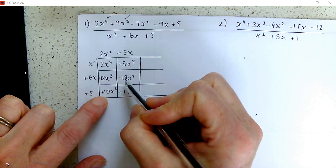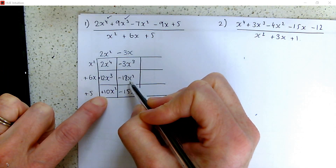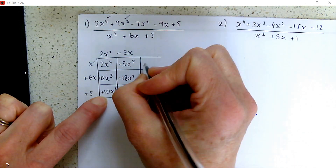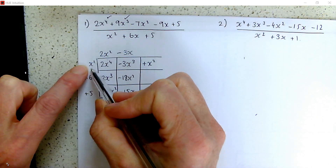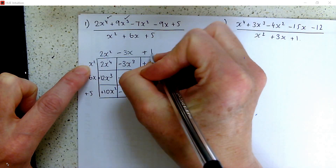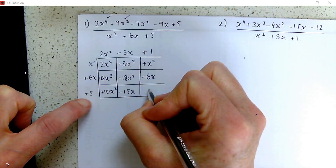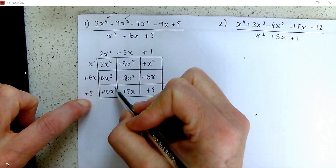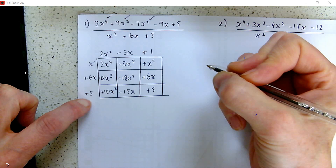We've got 10x squared minus 18x squared, which is minus 8x squared. But we want minus 7x squared, so we need to add x squared. We think: what do we multiply x squared by to make x squared? Just 1. And we multiply going down. So we now have a total of minus 7x squared — so that's dealt with.